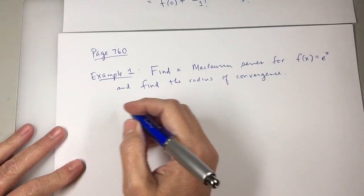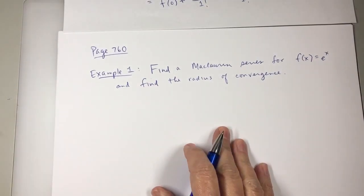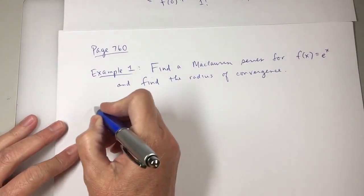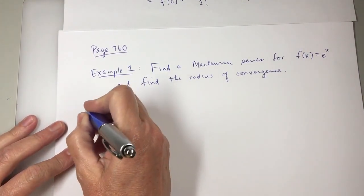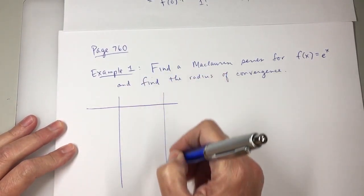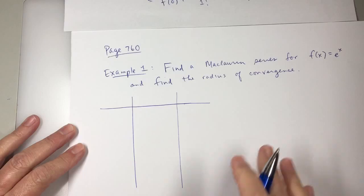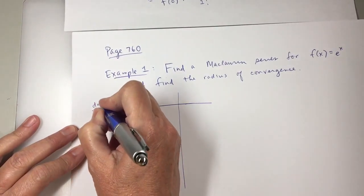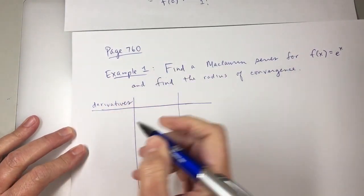I'm going to organize the information I need in the form of a little chart. I will have a column for derivatives. I don't remember if I want two columns or three columns. I'm going to go with three derivatives.